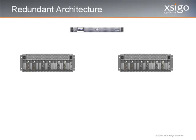Now let's look at the physical host. It requires two InfiniBand connections, one to each chassis. Ideally, two single-port HCA cards can be used to provide connections for the chassis. But if you don't have room for two cards in the host, a single two-port card could be used instead.